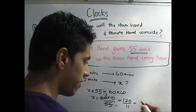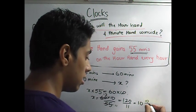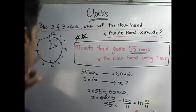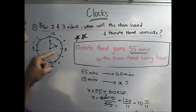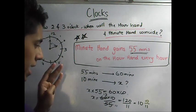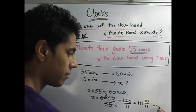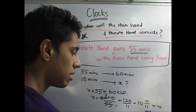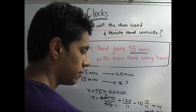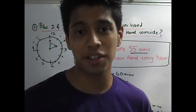Converting to a mixed fraction, that is 10 and 10/11 minutes. So after this much time, the minute hand will coincide with the hour hand. Your answer is: the minute hand will coincide with the hour hand at 10 and 10/11 minutes past 2 o'clock. Simple. Let's move on to the second problem.